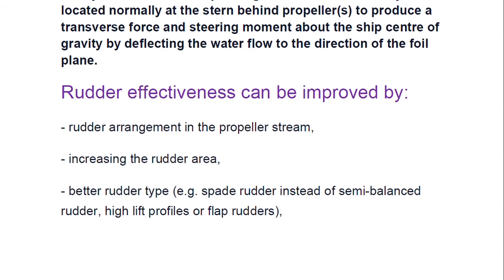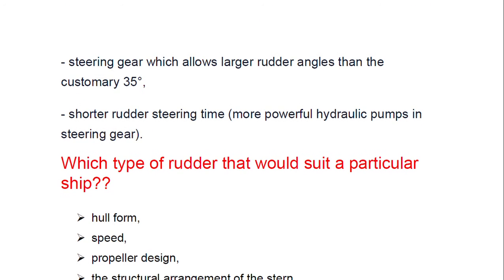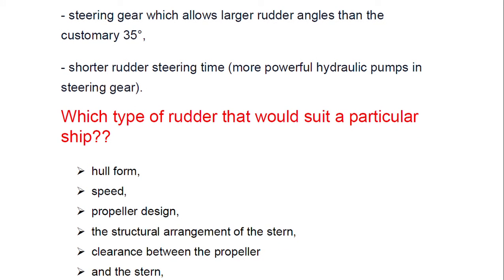Rudder effectiveness can be improved by positioning the rudder in the propeller's stream, increasing the rudder area, using a better rudder type such as a spade rudder instead of a semi-balanced rudder, using high-lift profiles or flap rudders, and by using steering gear that allows a larger rudder angle than the customary 35 degrees. Shorter steering time and more powerful hydraulic pumps in the steering gear also help.